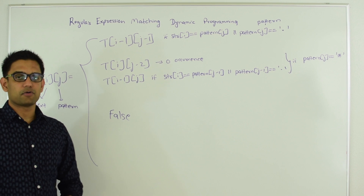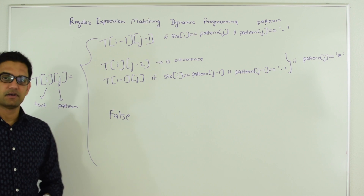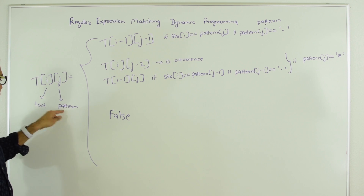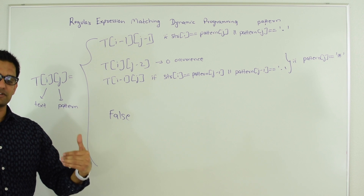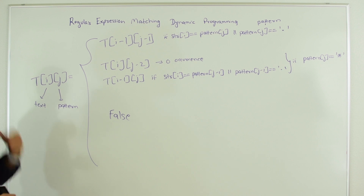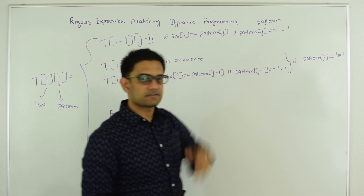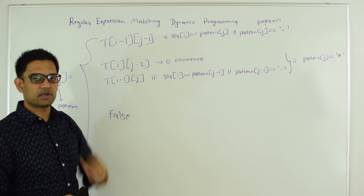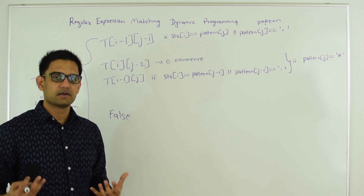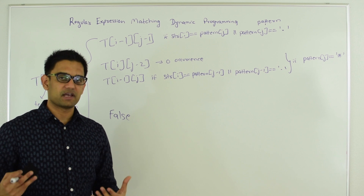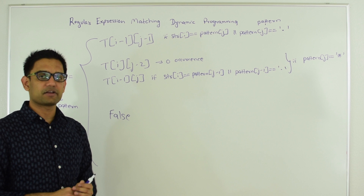First let's look at the recurrence relationship — how we're going to fill up the table in bottom-up dynamic programming. T is a two-dimensional boolean matrix where I is the index in the text and J is the index in the pattern. If T[i][j] is true, it means up to the Ith character in the text and Jth character in the pattern there is a regular expression match. If string[i] is the same as pattern[j], or if pattern[j] is dot, then T[i][j] becomes T[i-1][j-1].